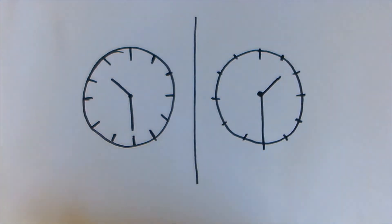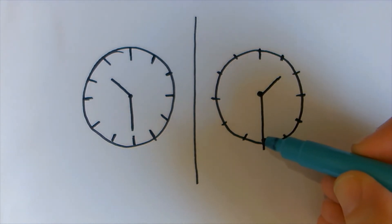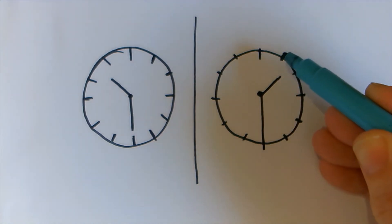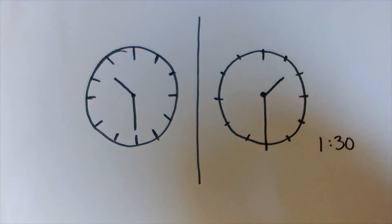So did you get the answer? If you were to draw it, it would look like this. And this is 1:30, so half past one. It wasn't half past two because it's only gone past the one. So it was half past one, 1:30. Well done if you got that right.